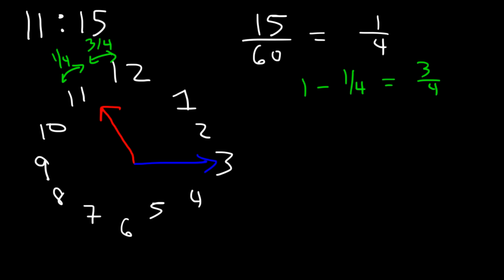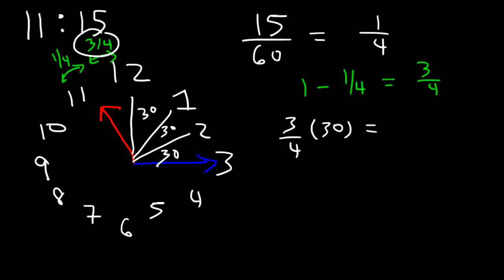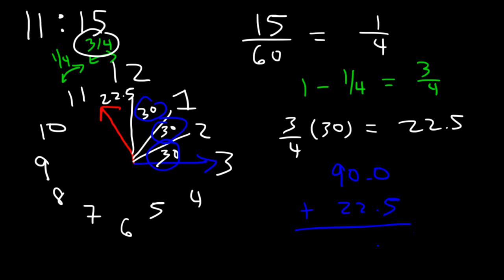Now that we have that, let's go ahead and calculate the angle. Every hour represents 30 degrees. The angle between the hour hand and 12 is going to be 3 fourths of 30. So what is 3 fourths of 30? 30 divided by 4 is 7.5. 7.5 times 3 is 22.5. So that's the missing angle. If we add 30 three times, that's 90. So we've got to add 90 plus 22.5, and that's going to be 112.5. So that is the angle between the hour hand and the minute hand — it's 112.5 degrees.